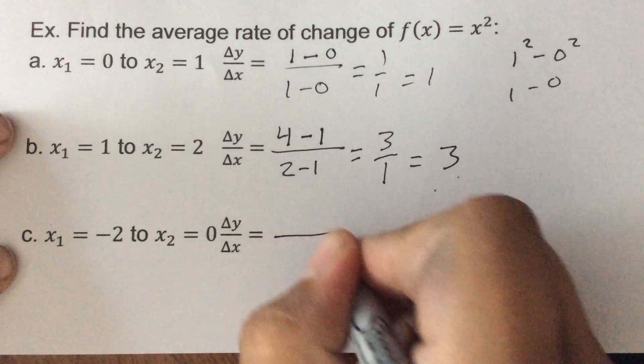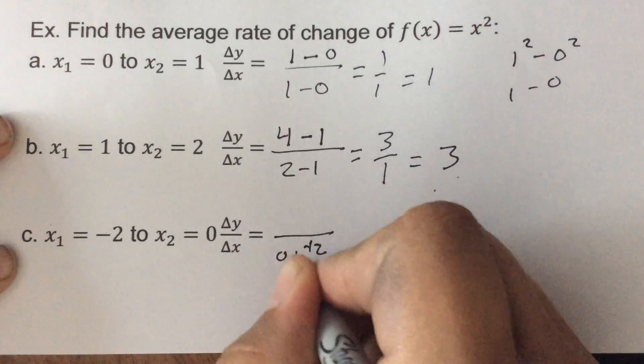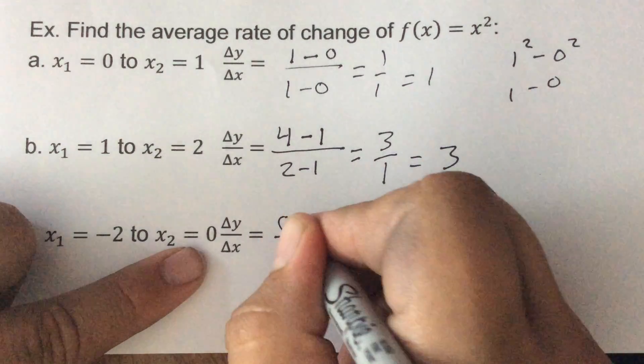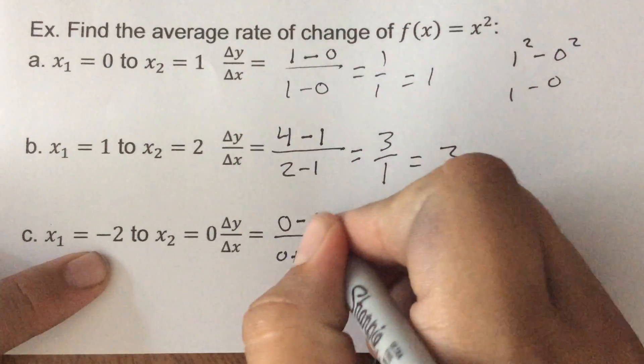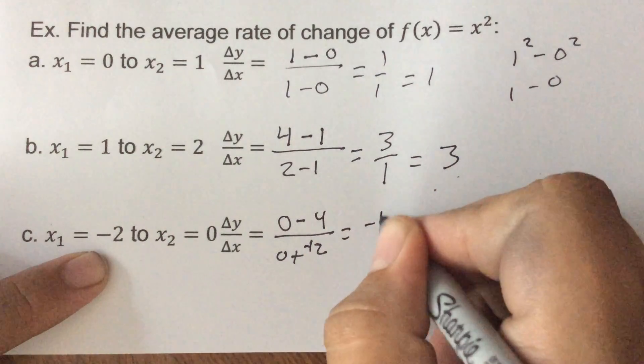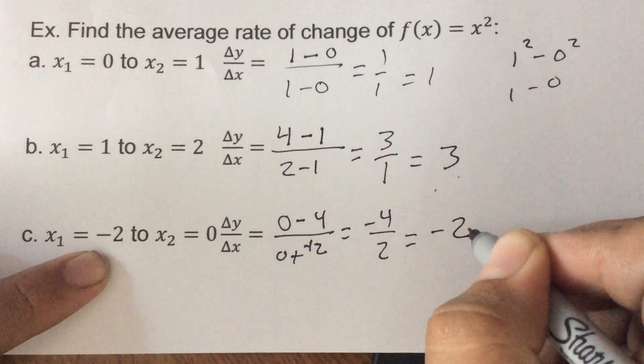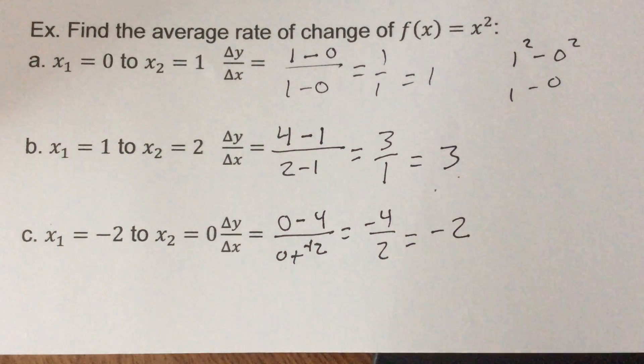This one here, zero minus a negative two. On top, zero squared is zero minus negative two squared which is four. We would get negative four over two which is a negative two. So average rate of change - we take those x's, put them into our function, what we get out as the y's we can subtract on top, we subtract the x's on the bottom, simplify it out.